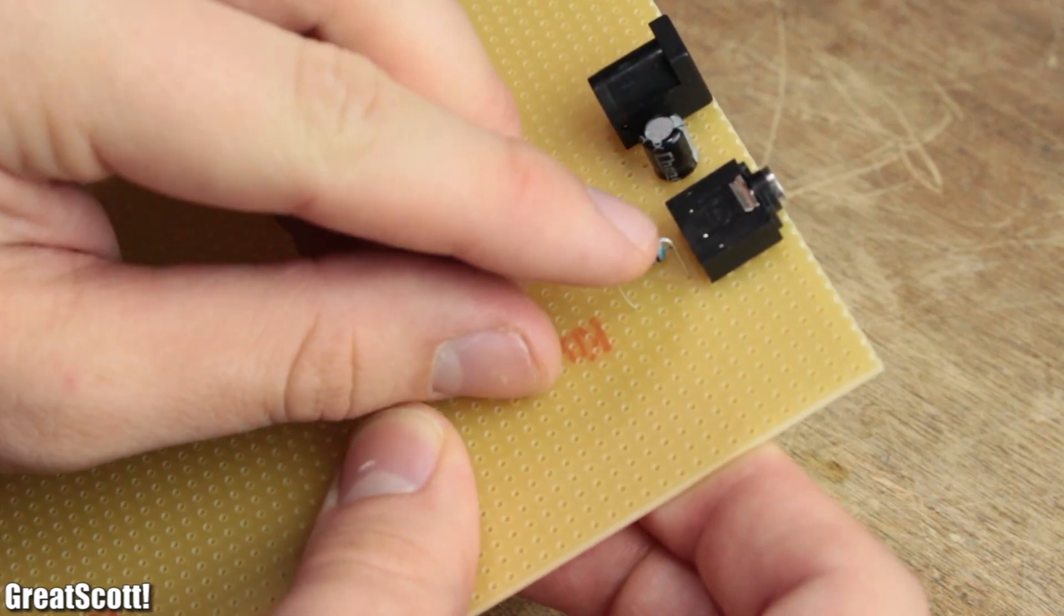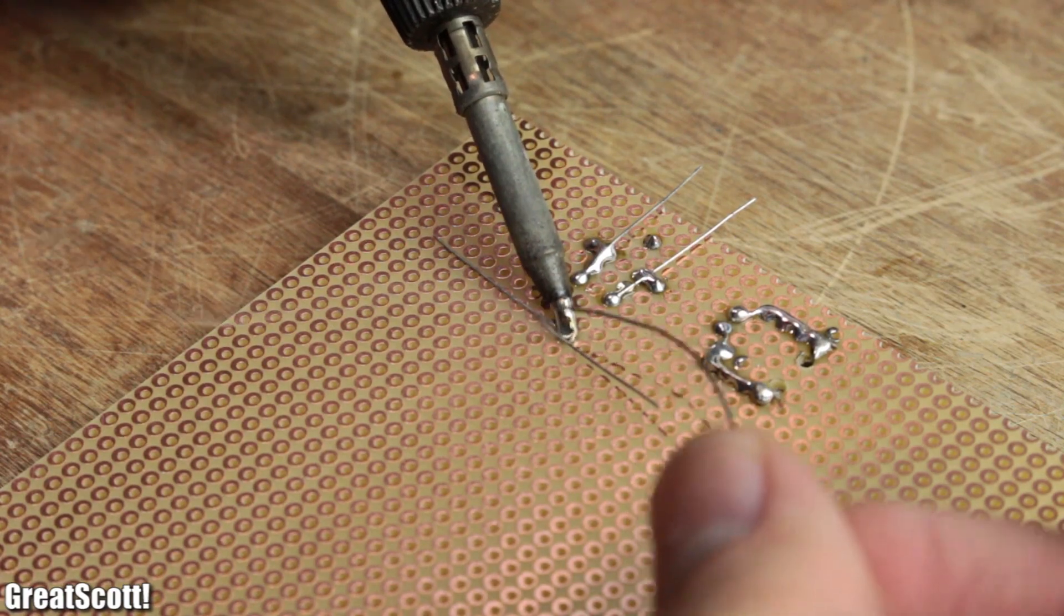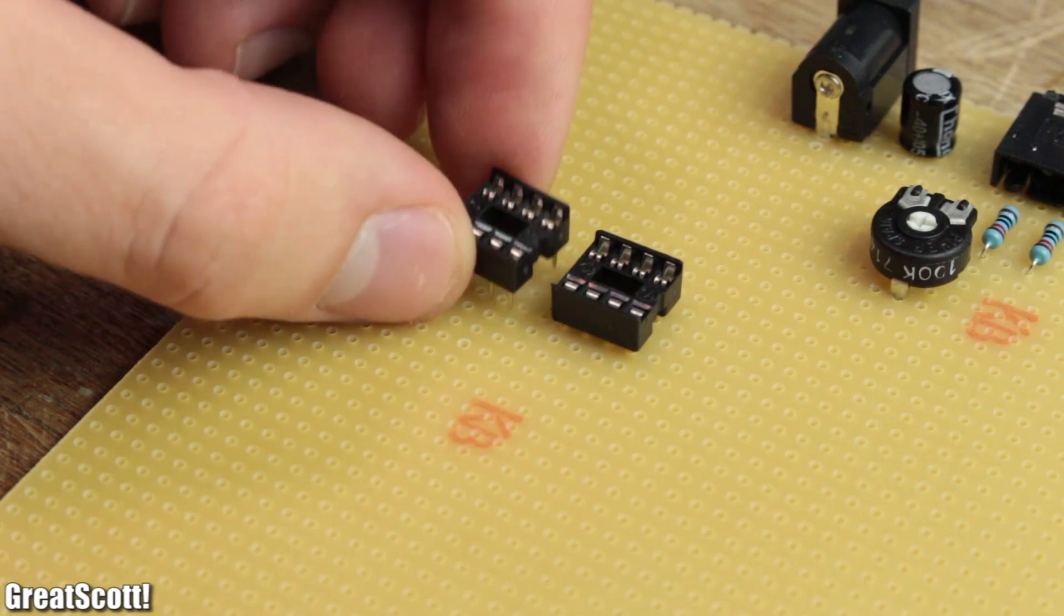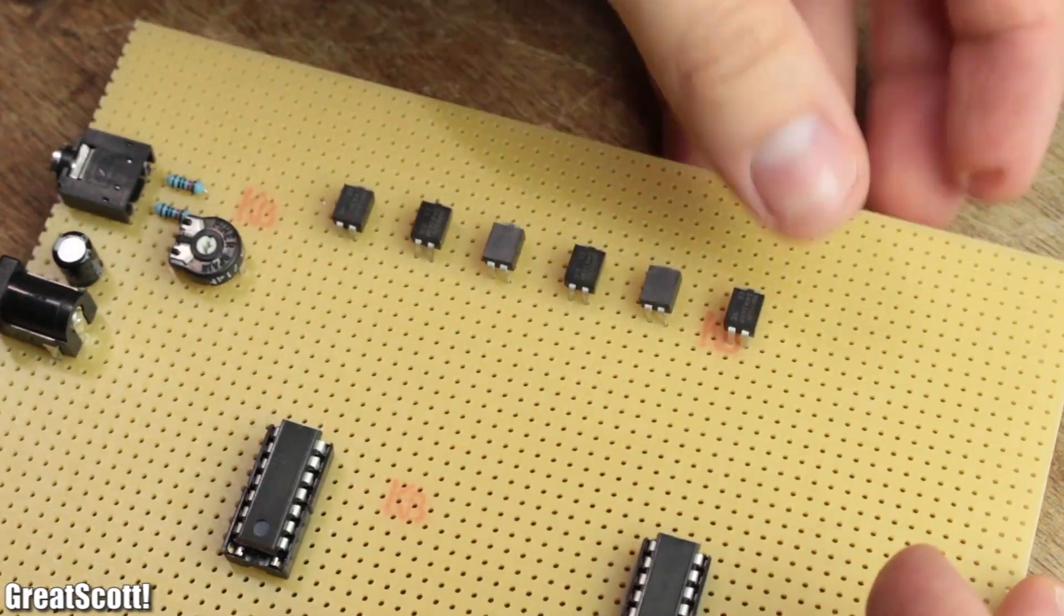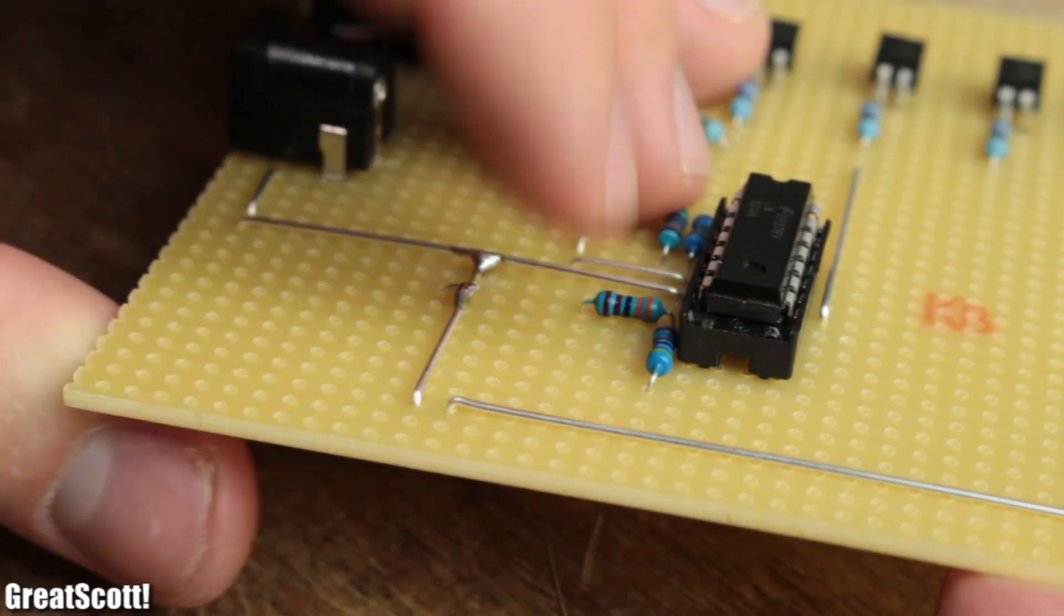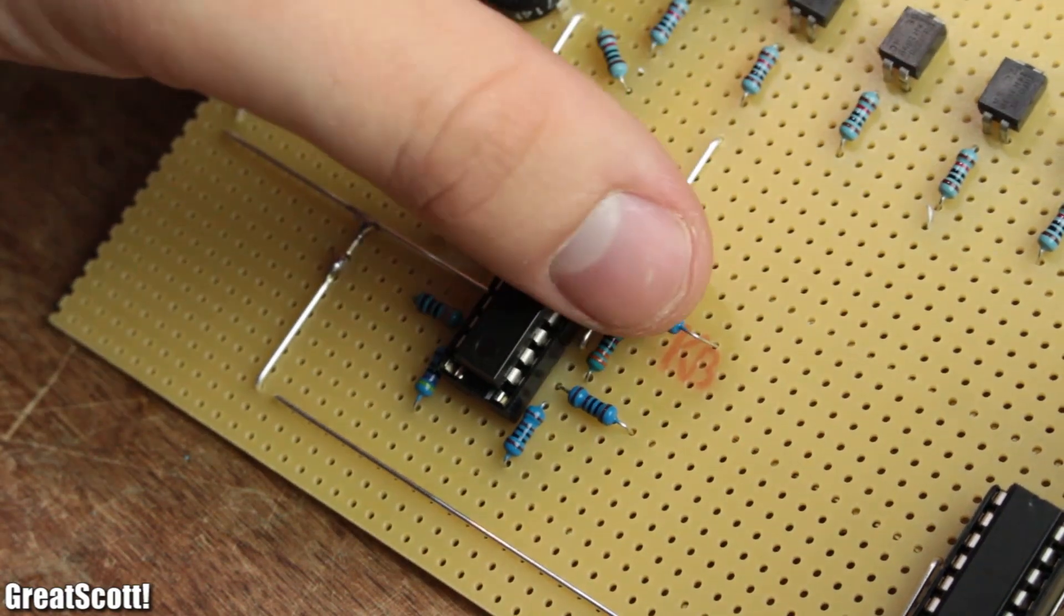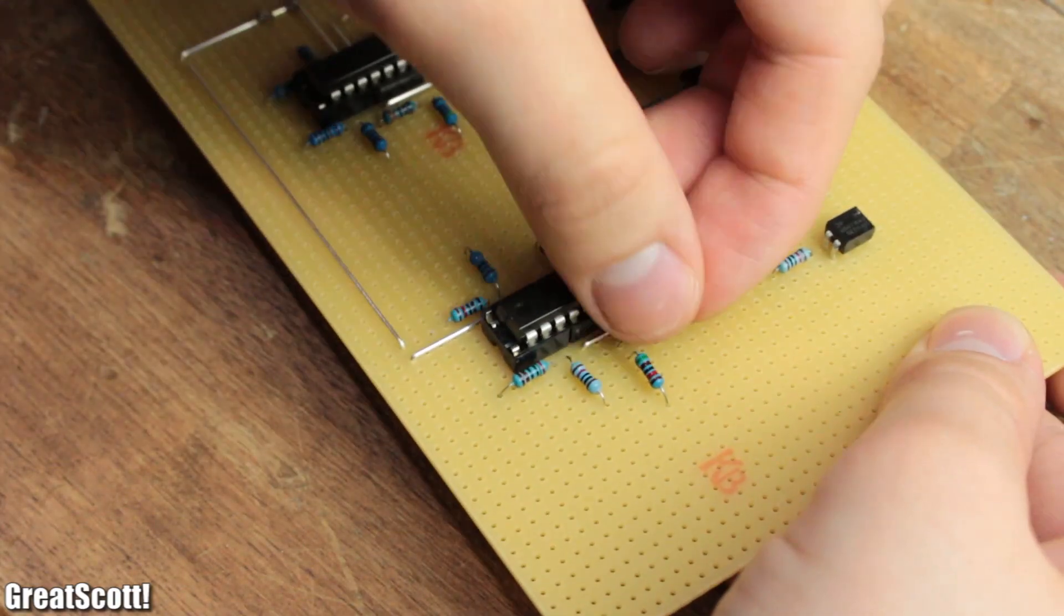According to the schematic I then added the mixing resistors, the potentiometer, IC sockets for the quad-op-amp ICs, the MOSFETs with pull-down resistors, and finally all the resistors to set the amplification factor and create the reference voltages.